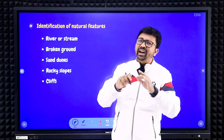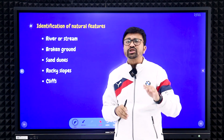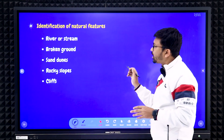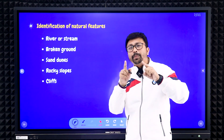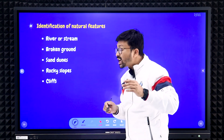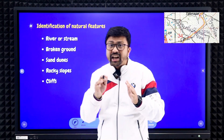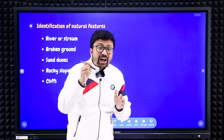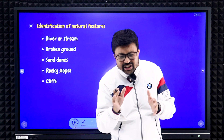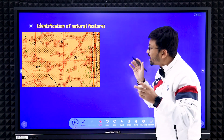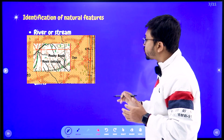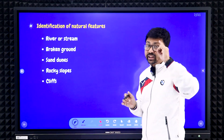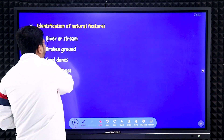Next, a very important question — according to the four-figure grid reference, they will ask what are the natural features and what are the man-made features. For natural features, first look for rivers or streams, then broken ground, sand dunes shown as brown color patches, rocky slope, rocky outcrop, and cliffs — all of these are natural features.